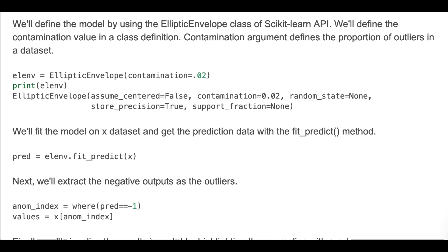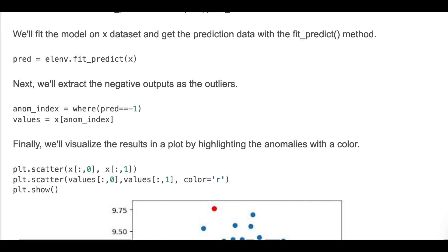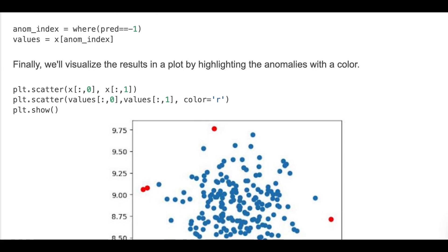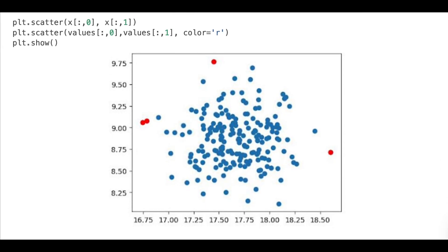Then we'll extract the negative outputs as outliers and find their values. Finally, we'll visualize results in a plot by highlighting the anomalies with a color. This graph shows detected anomalies in the dataset, highlighted in red.